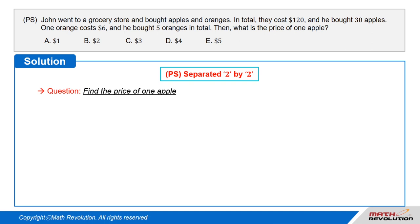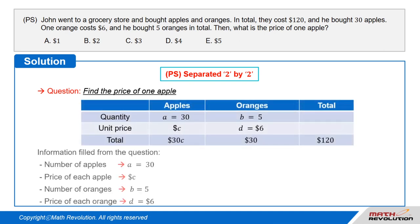We have to find the price of one apple. We fill up the information in the table as the following. Number of apples equal to A, which equals 30. Price of each apple equal to C dollars.